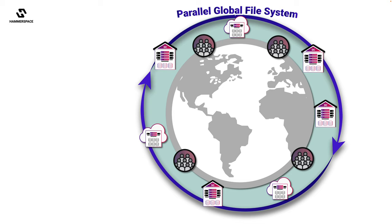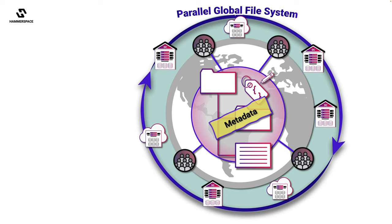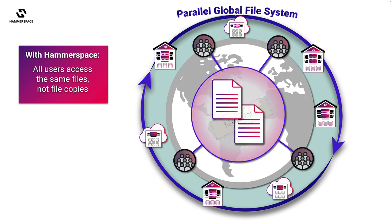This powerful capability means that all users everywhere are looking at the same file system metadata. This is not Site A sending file copies to Site B or C, but rather, all sites seeing the exact same files based upon this universal metadata layer. In this way, remote workers and teams are able to collaborate on the same projects globally, without needing to shuffle file copies everywhere.